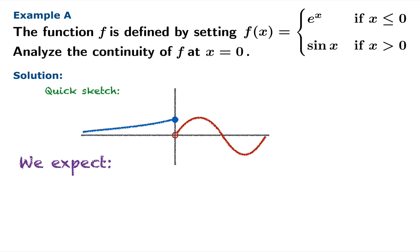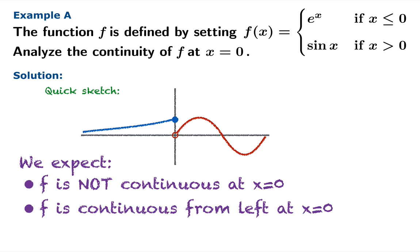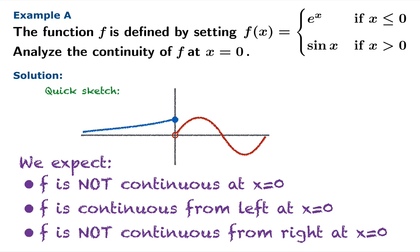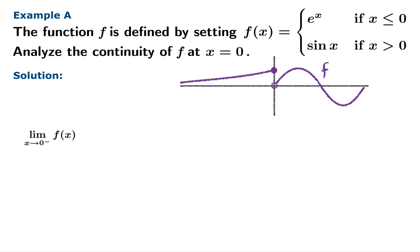Based on this sketch we would expect that f is not continuous at the origin because the limit doesn't exist. It will be continuous from the left but not from the right. It's intuitively clear, but what we should do is be official about it — go right to the definitions and back everything up with a rigorous justification.